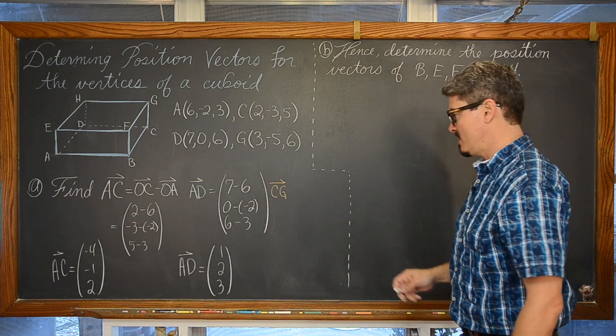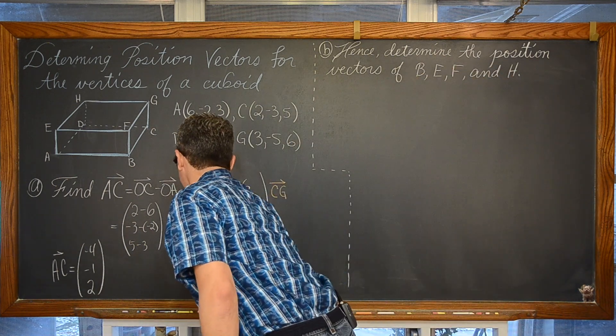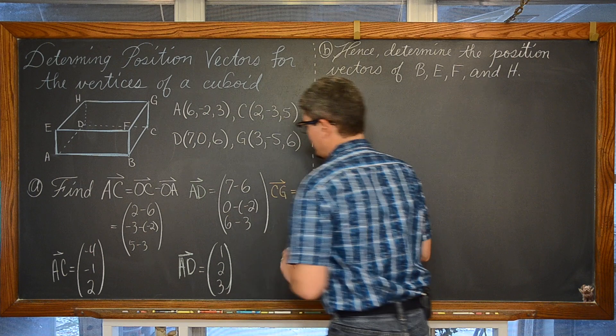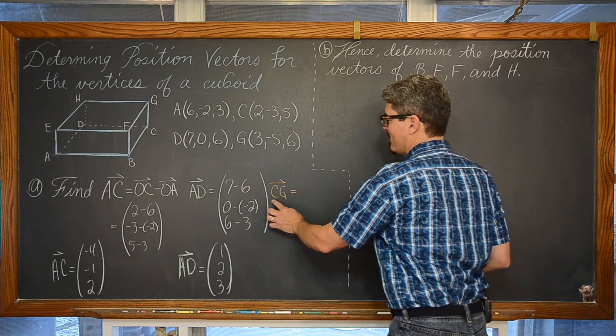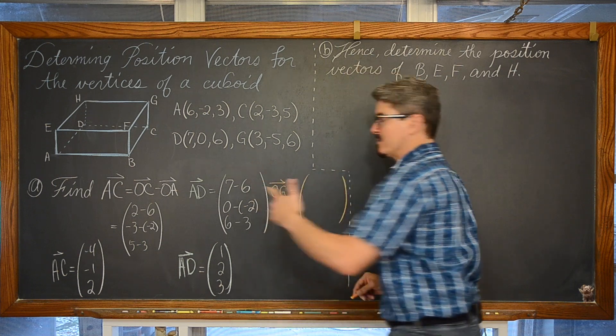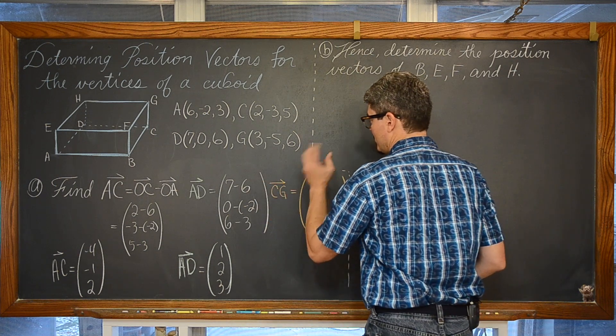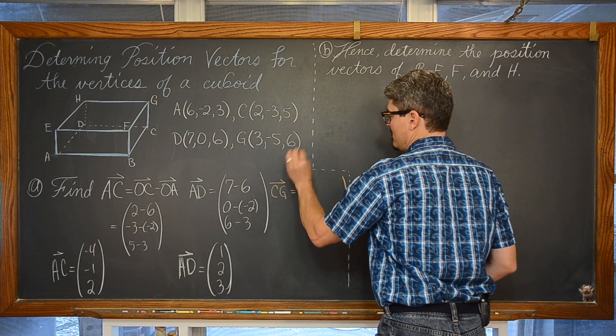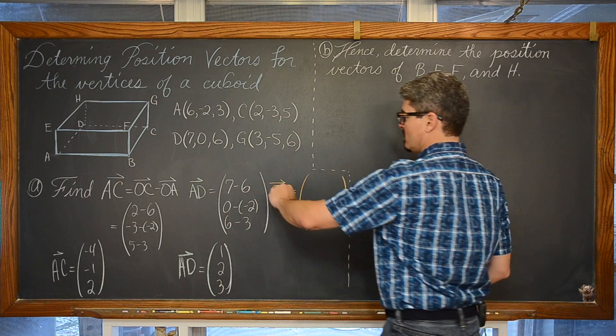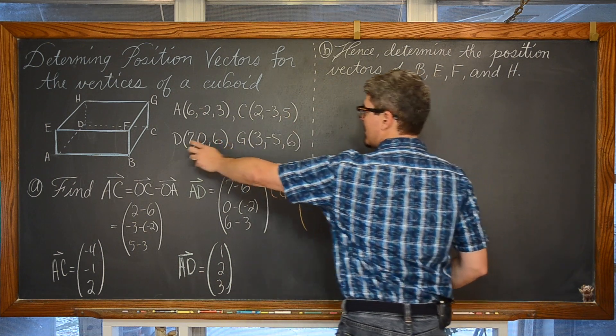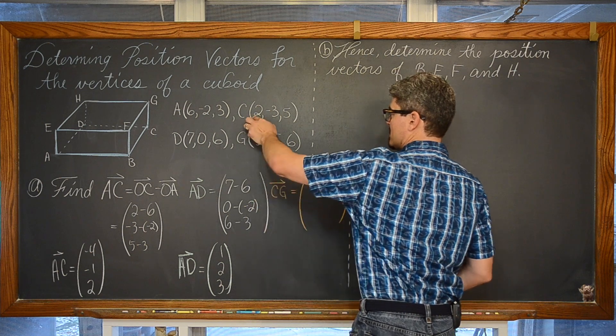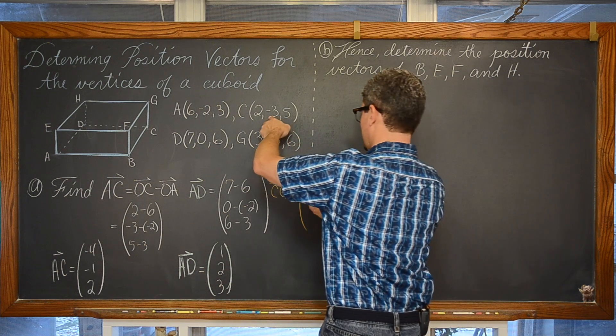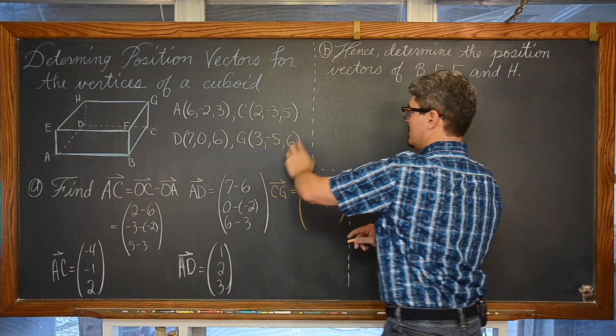And then vector CG. I meant to color code these. Vector CG, not the same initial point of A now, so pay attention to what you are doing. Terminal minus initial, or the position vector for coordinate G minus the position vector for coordinate C. So vector OG minus vector OC, or just subtracting the components, 3 minus 2, negative 5 minus negative 3, 6 minus 5.